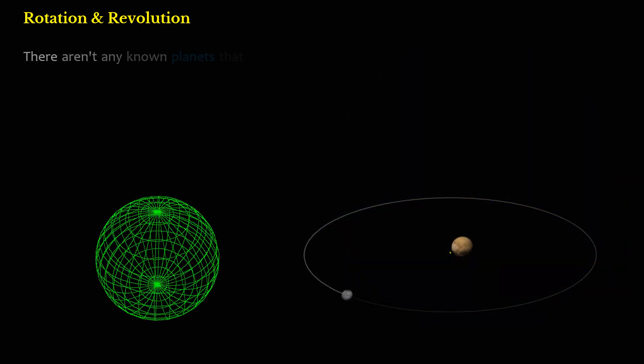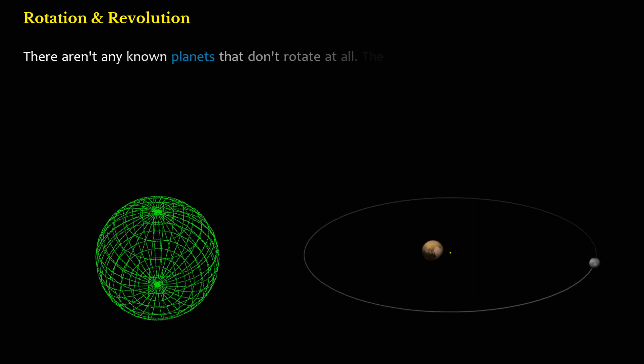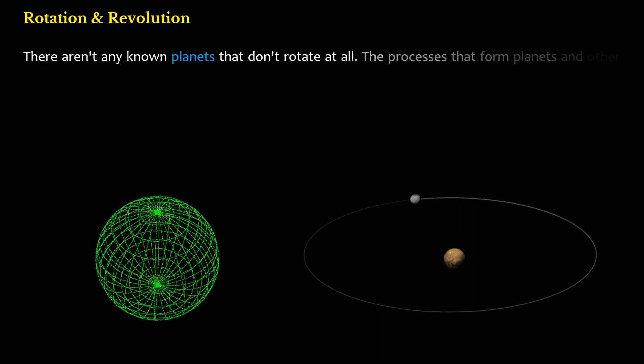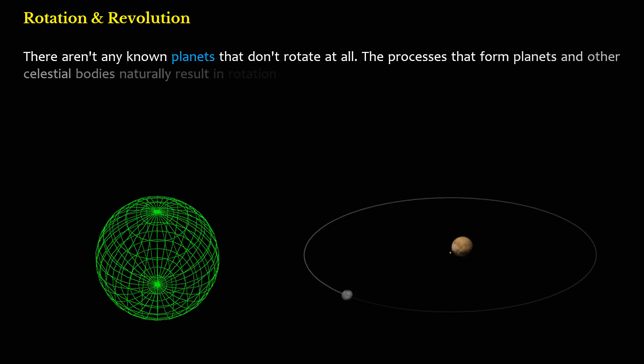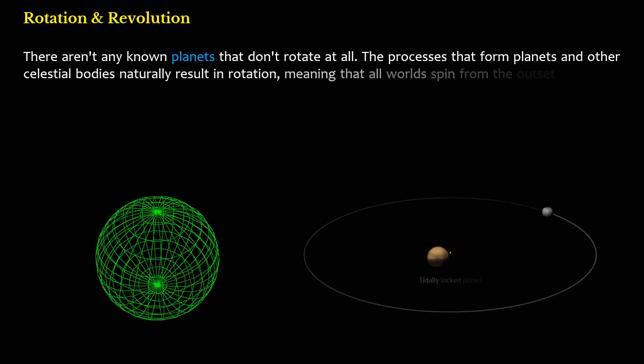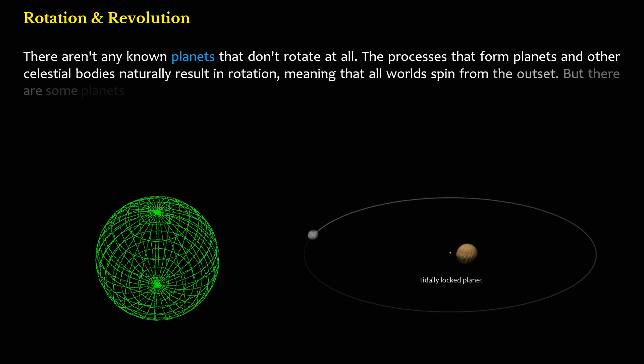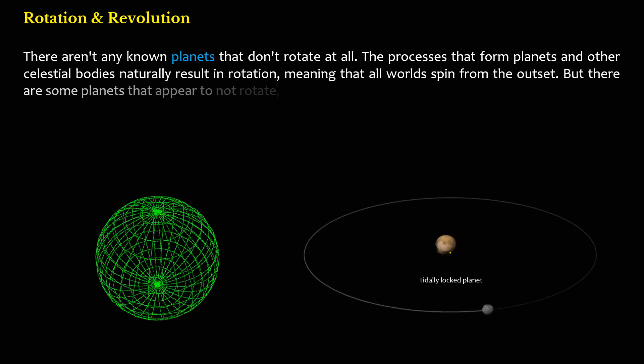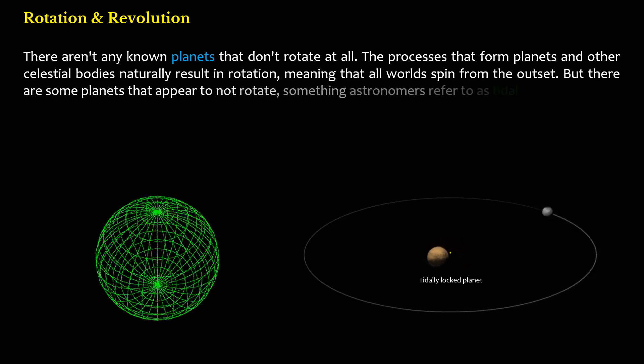There aren't any known planets that don't rotate at all. The processes that form planets and other celestial bodies naturally result in rotation, meaning that all worlds spin from the outset. But there are some planets that appear to not rotate, something astronomers refer to as tidal locking.